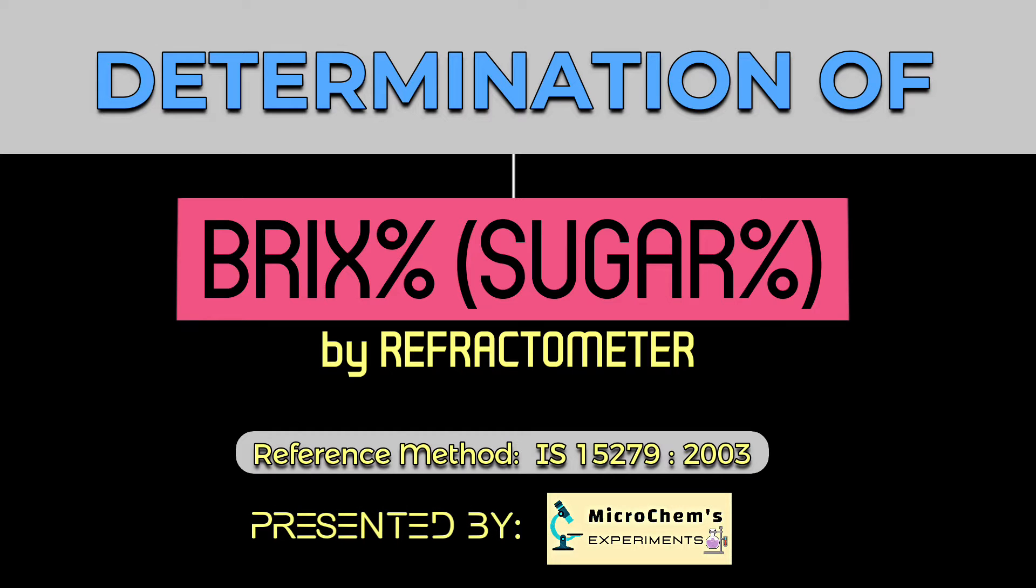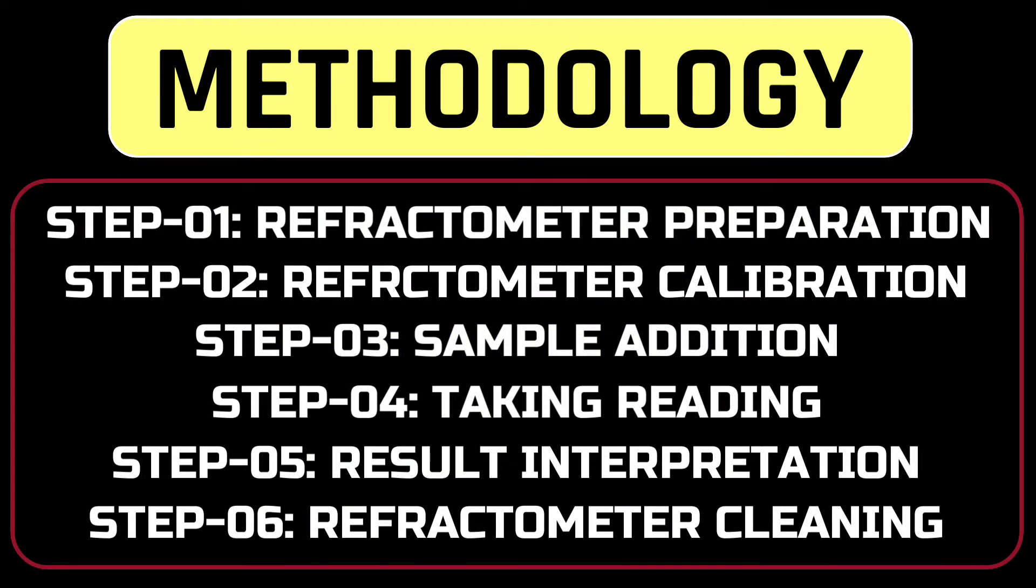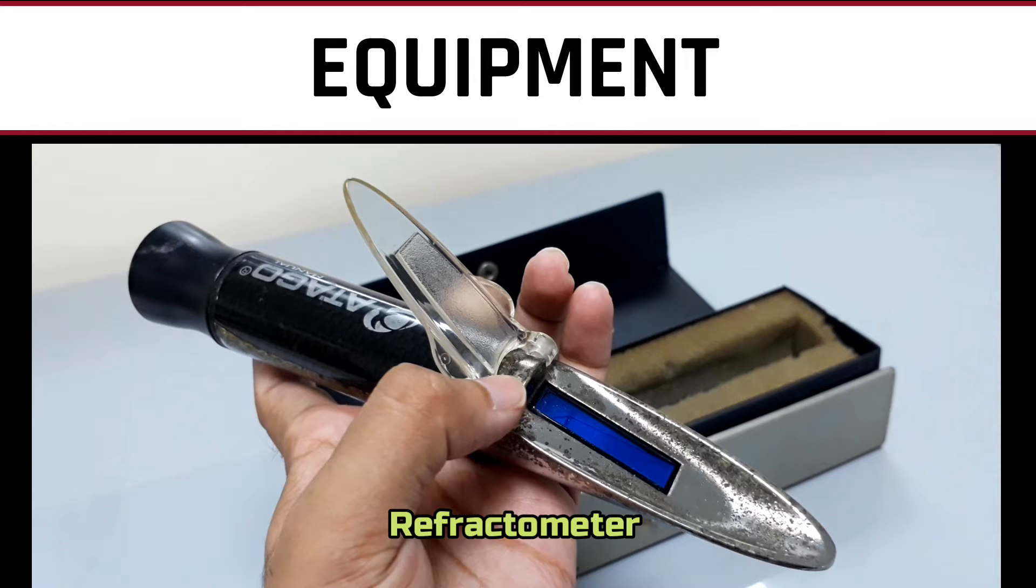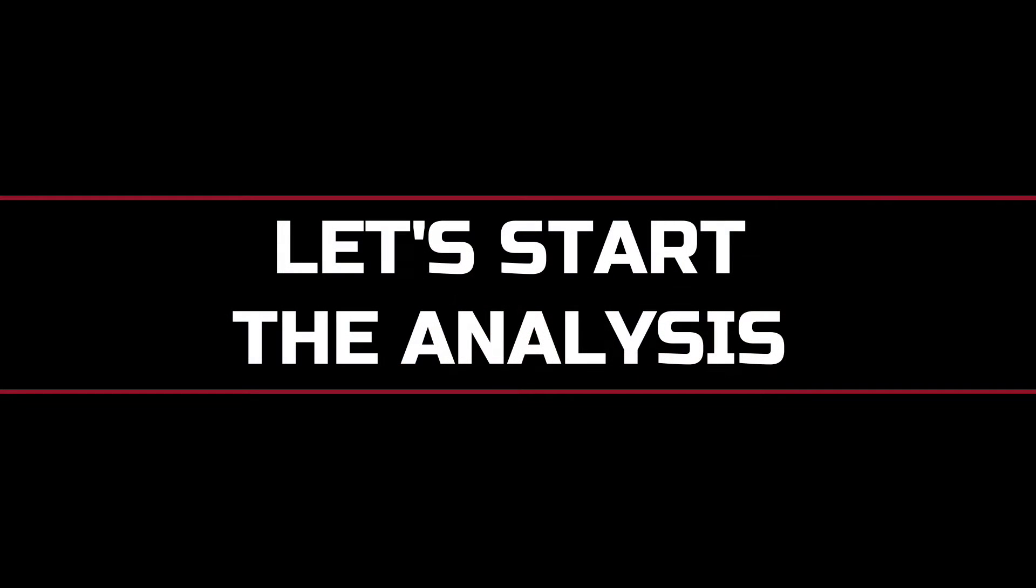Welcome to Microcaine's Experiments. This method involves six steps: refractometer preparation and calibration, sample addition, taking reading, result interpretation, and refractometer cleaning. To conduct this experiment we need only a refractometer. Let's start the analysis.